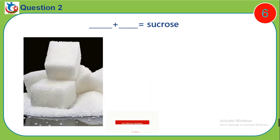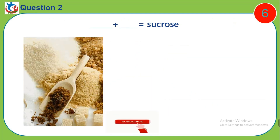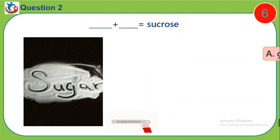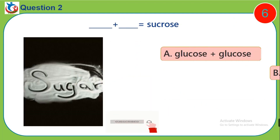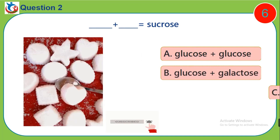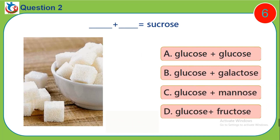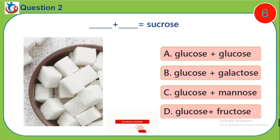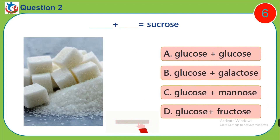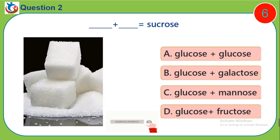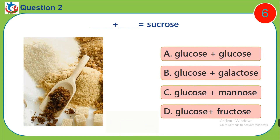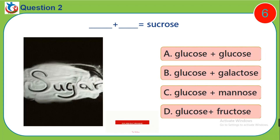Question 2. Dash plus dash equals sucrose. A. Glucose plus glucose, B. Glucose plus galactose, C. Glucose plus mannose, D. Glucose plus fructose.